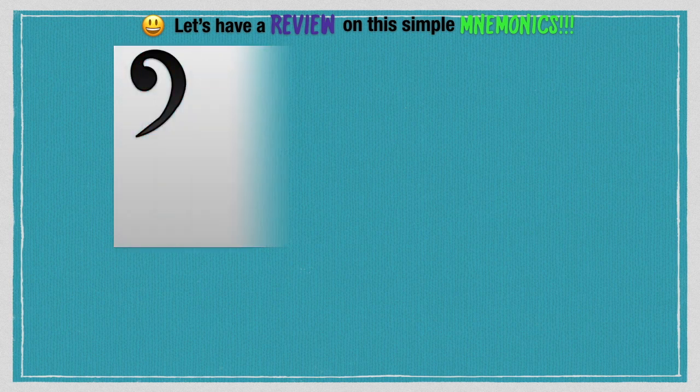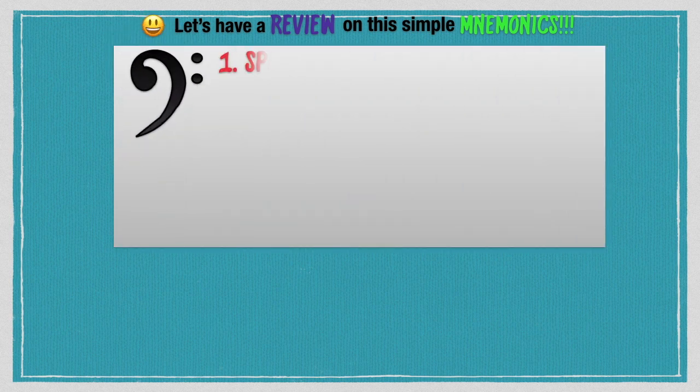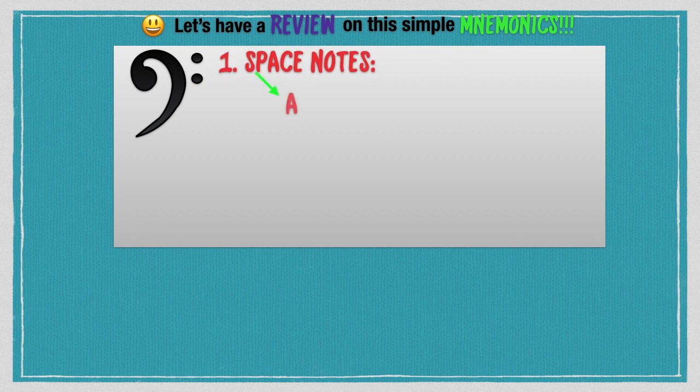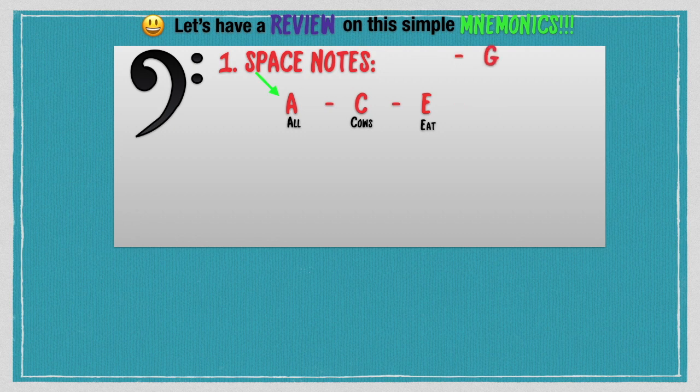The mnemonics for the bass clef staff for the space notes are A stands for all, C stands for cows, E stands for eat, G stands for grass. All cows eat grass.